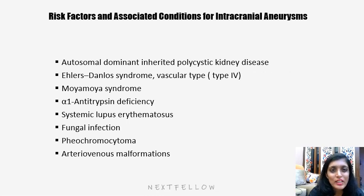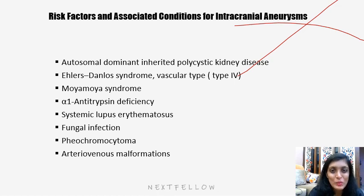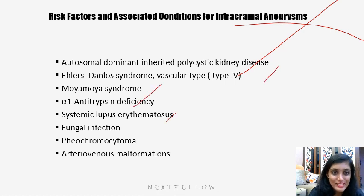Risk factors associated with certain conditions for intracranial aneurysm include: ADPKD — autosomal dominant polycystic kidney disease — Ehlers-Danlos syndrome vascular type 4, Moya-Moya syndrome, alpha-1 antitrypsin deficiency, SLE, fungal infections, pheochromocytoma, and AV malformations.